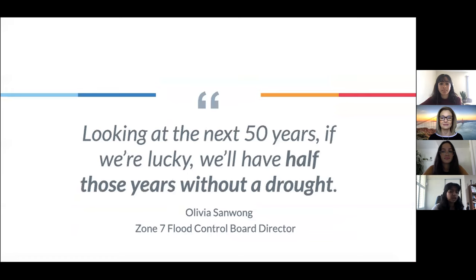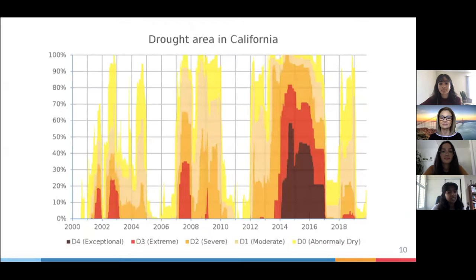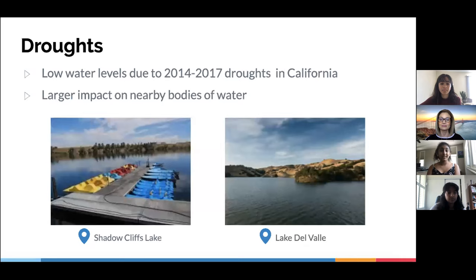Pleasanton gets enough rainfall some years, but it is mainly a drought climate. We met with Olivia Sanuang, the Vice President of the Board of Directors for Zone 7, and she said bluntly: if we're looking at the next 50 years, if we're lucky, we'll have half those years without drought. Clearly, when it comes to droughts in California, it is not a matter of if but when. As you can see from this graph, drought periods are becoming longer and more severe. From 2014 to 2017, droughts significantly impacted our town — Shadow Cliffs and Delaval's water levels were at the lowest we've ever seen, and every other house had brown lawns. Our efforts to conserve water shouldn't end when the drought does.